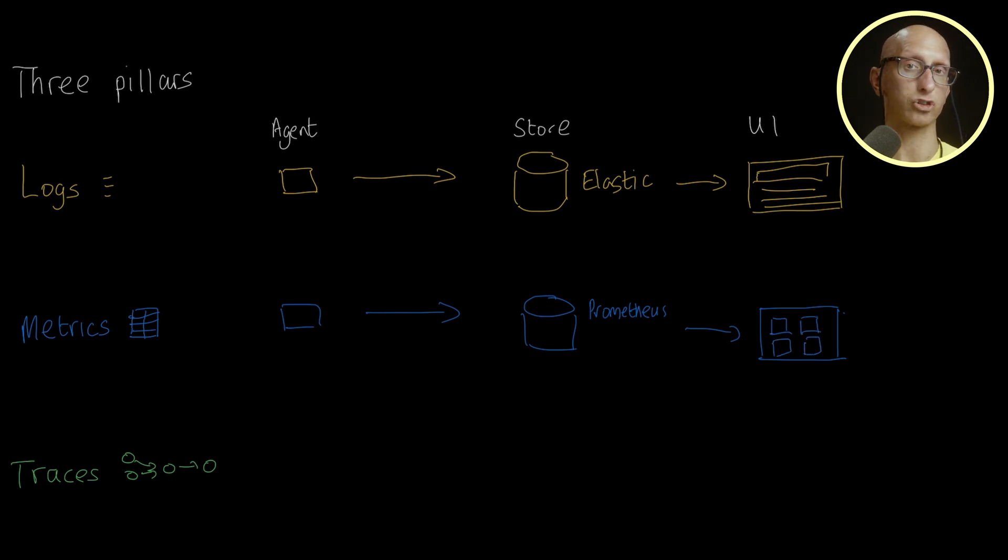Finally, we've got traces, which document the journey of requests as they move through different parts of a system. So we might have traces for HTTP request flows, database query execution paths, authentication flows, and more.